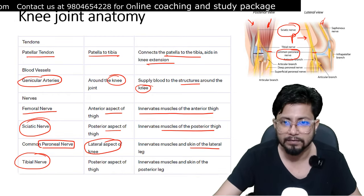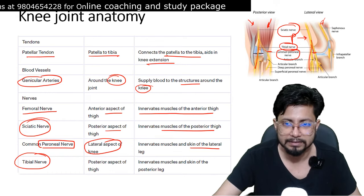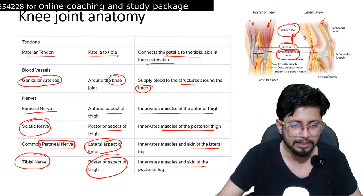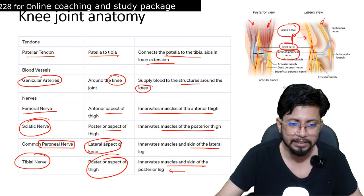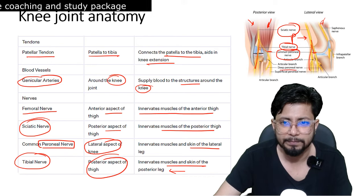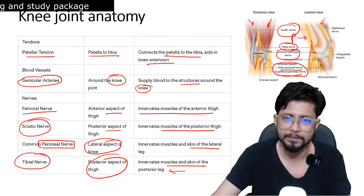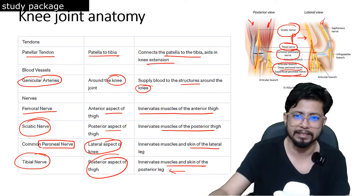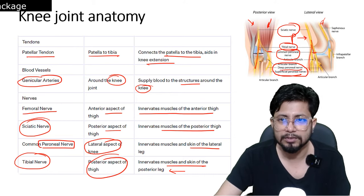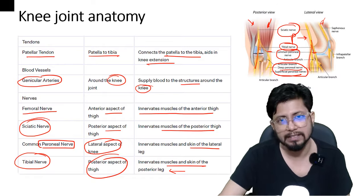The tibial nerve is on the posterior aspect of the thigh and innervates muscles and skin of the posterior leg. These are the four major nerves. Additionally, there are the deep peroneal nerve and the superficial peroneal nerve, which have been discussed in other lectures. These are the major nerves present around the knee joint.